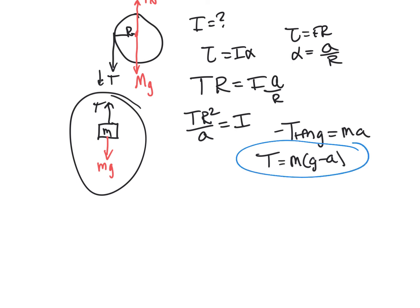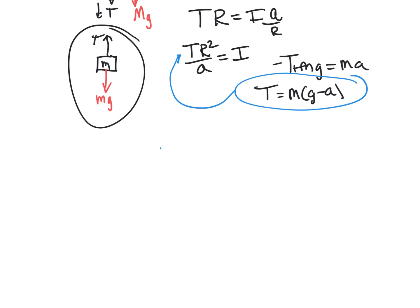And we can now take our tension and plug it in right here with our moment of inertia that we found. So we have R squared times M times G minus A all over A. And this actually simplifies. That's going to be the moment of inertia. If you like math, this is going to work out to be M R squared multiplied by G over A minus 1.